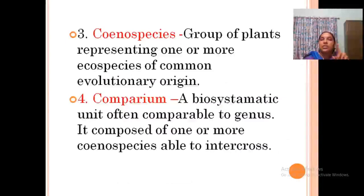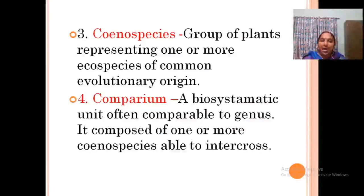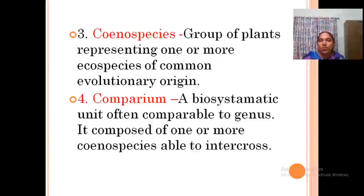The third category is cenospecies: a group representing one or more ecospecies of common evolutionary origin. The fourth is comparium: it contains one or more cenospecies that are able to intercross. These are the four categories in biosystematics.